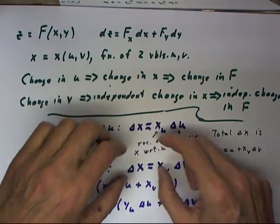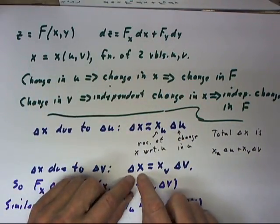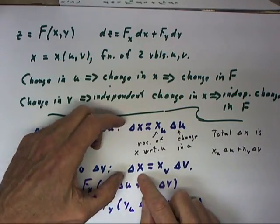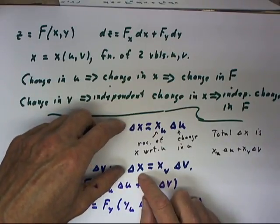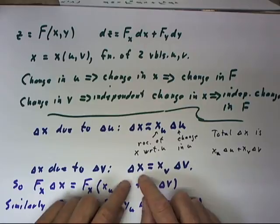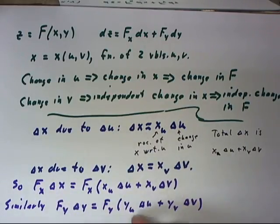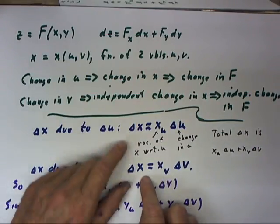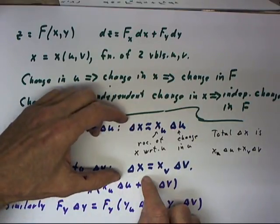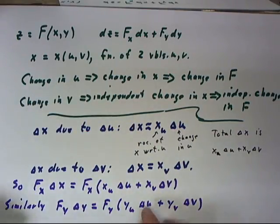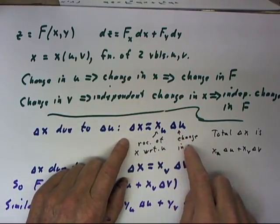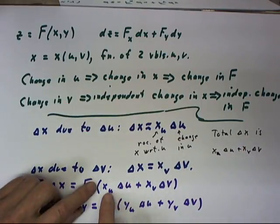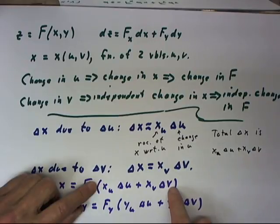Now, if we combine these two independent changes in x. And again, I've used the same symbol for the changes and I'm kind of apologizing for that, but I can't think of a good way to notate that, to make these different. But let's just accept that we have a change in x due to the change in u. Another change in x due to the change in v. And that gives us a total change in x of xu delta u plus xv delta v.